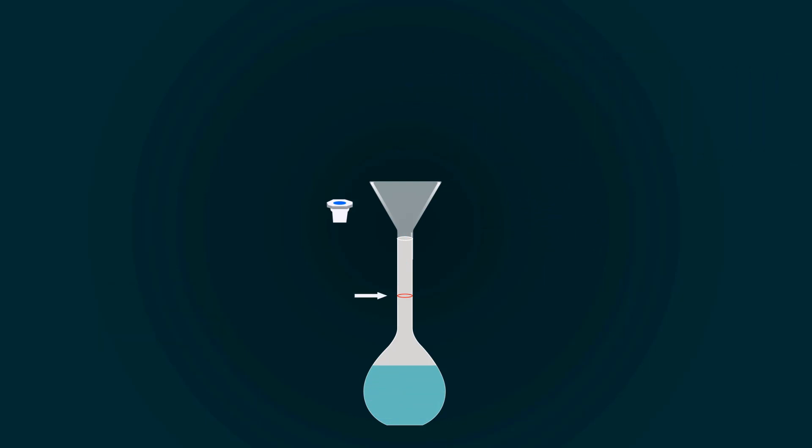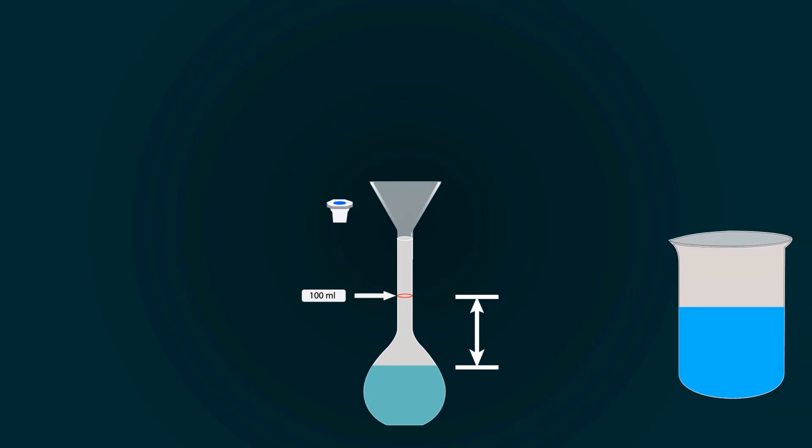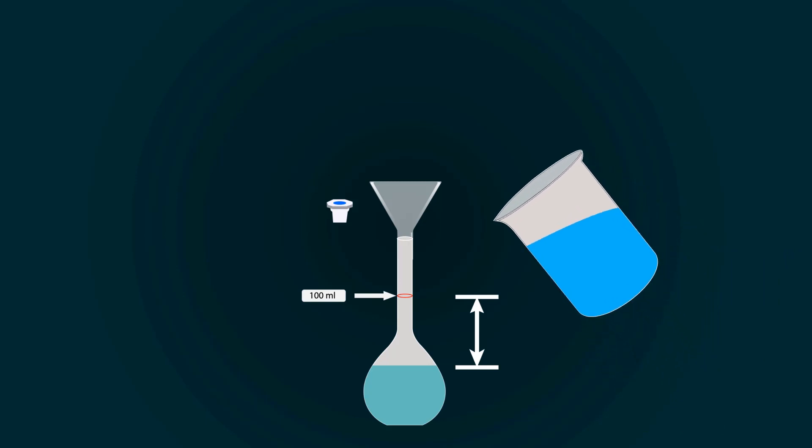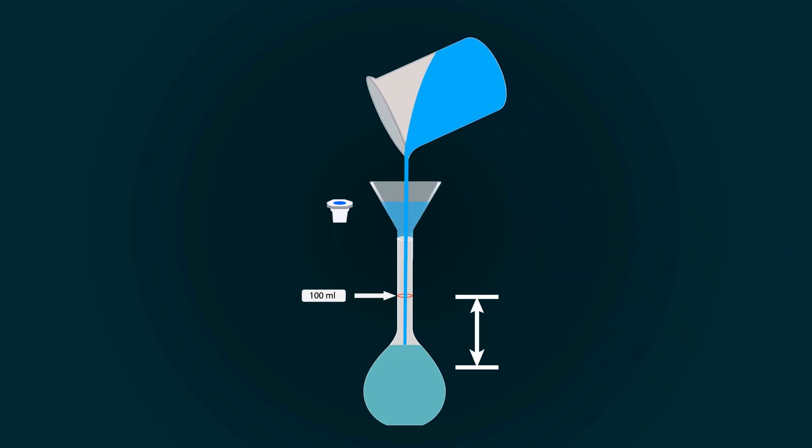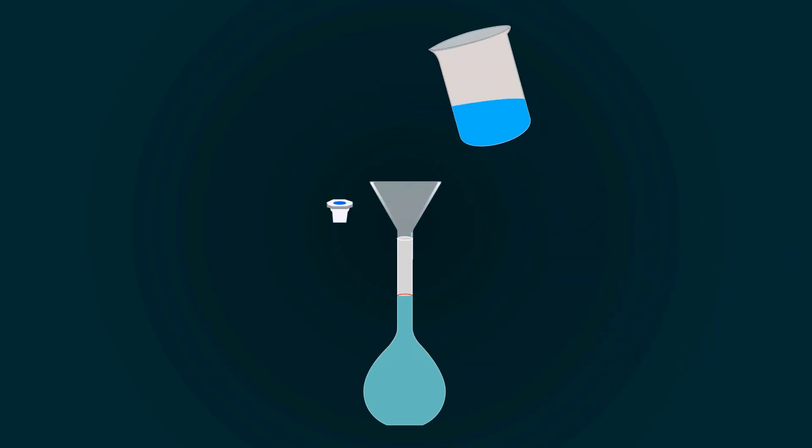You have to fill the volumetric flask up to the 100 milliliters point. For that, you have to add more distilled water. So take more distilled water into an empty beaker and start pouring it into the volumetric flask.